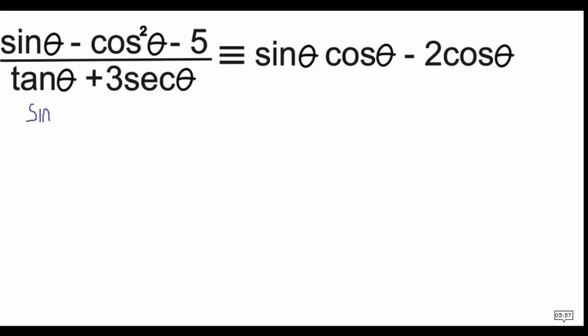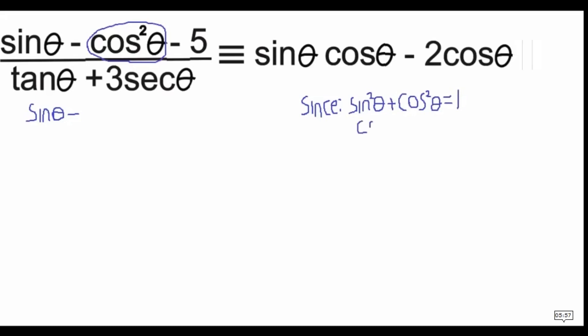I saw that cos squared theta can be expanded, since sin squared theta plus cos squared theta equals 1. When you make cos squared theta the subject, it becomes cos squared theta equals 1 minus sin squared theta. You then need to put that substitution in brackets.